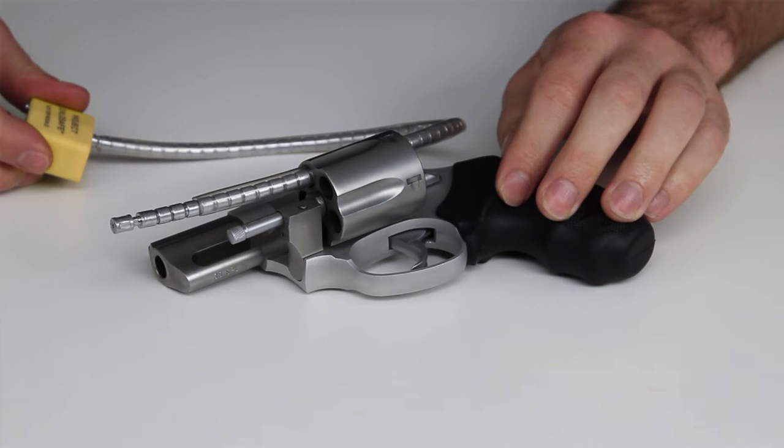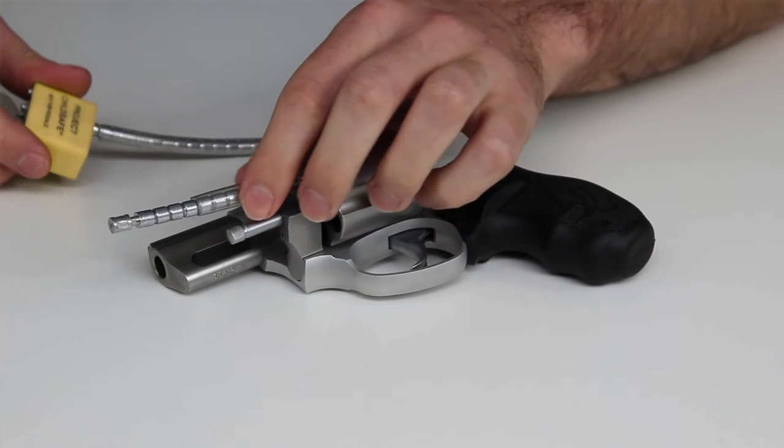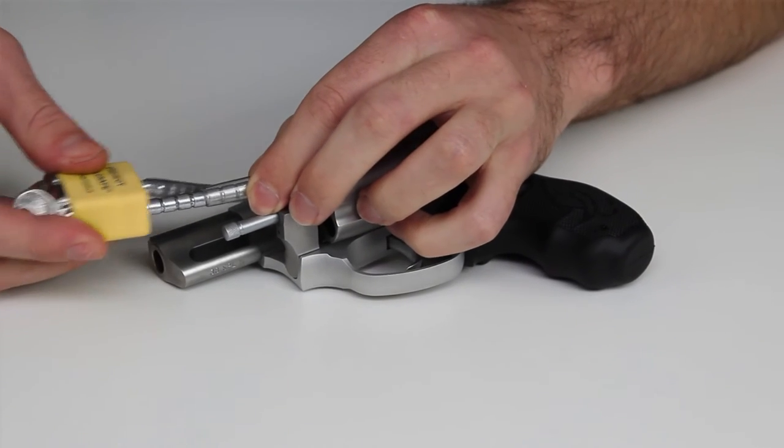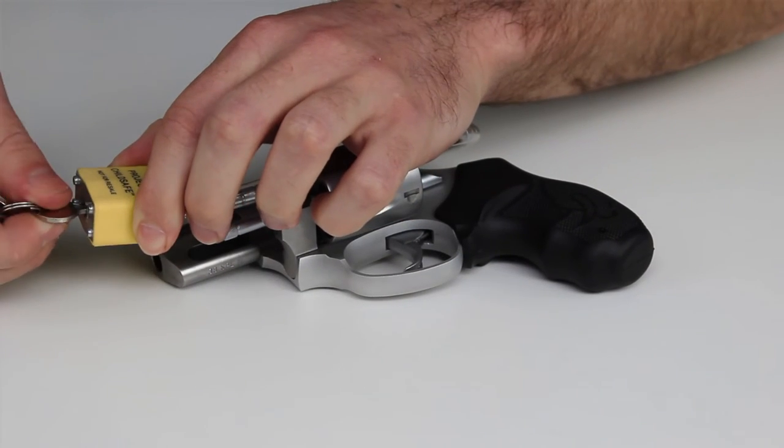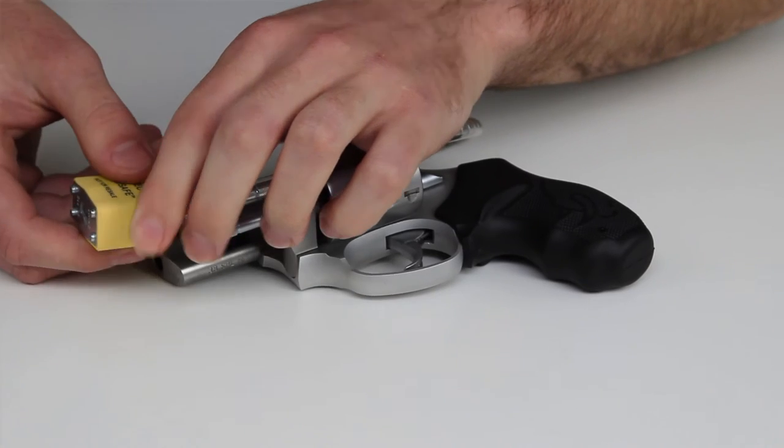To lock: With the key turned to farthest clockwise position, insert loose end of cable into padlock. Turn key counterclockwise and remove key. Check that the cable is secure.